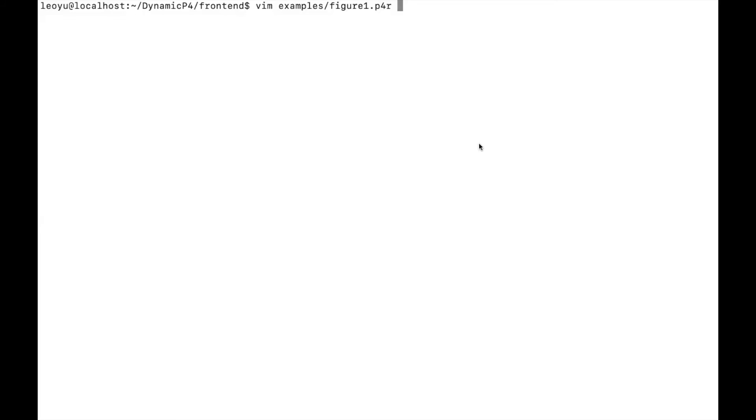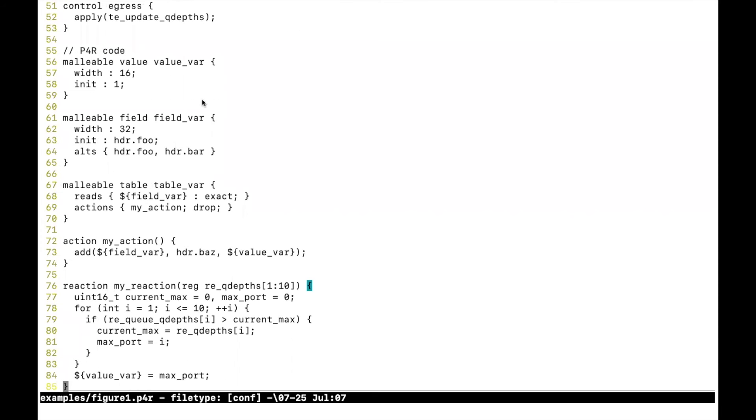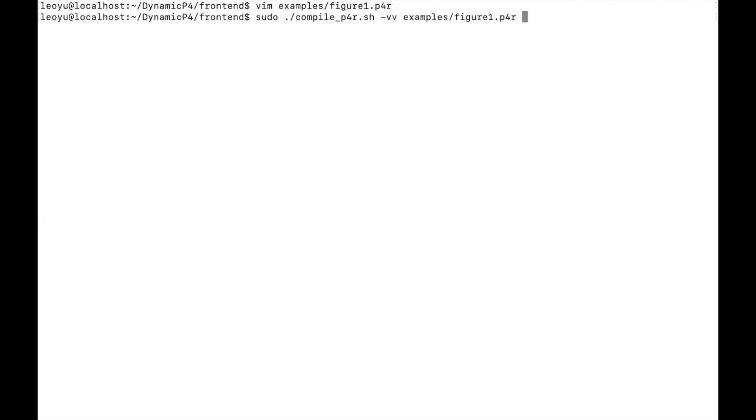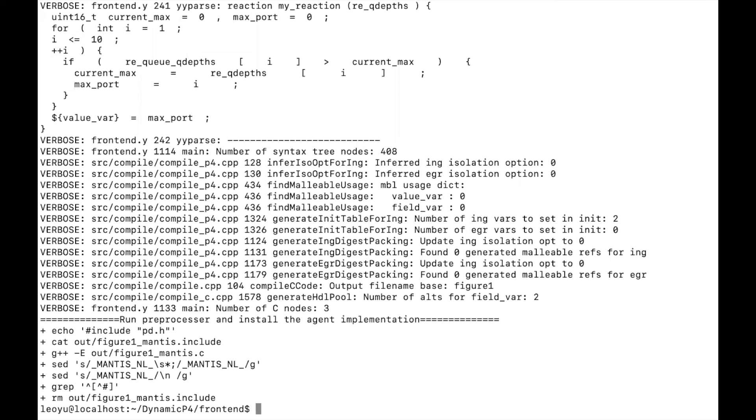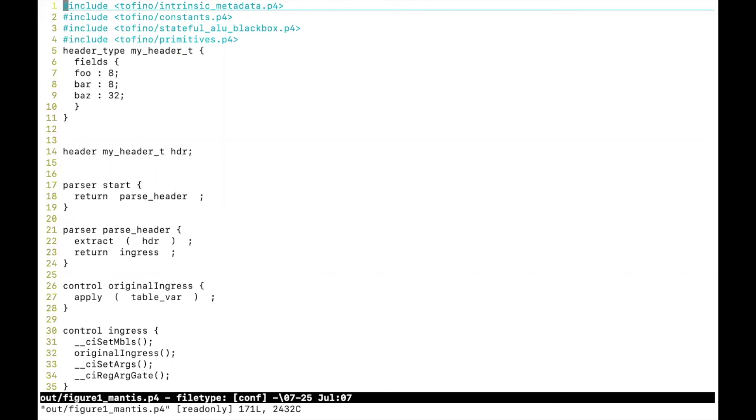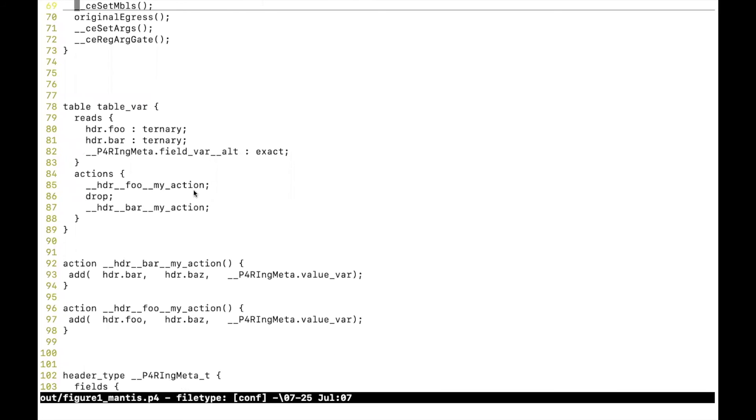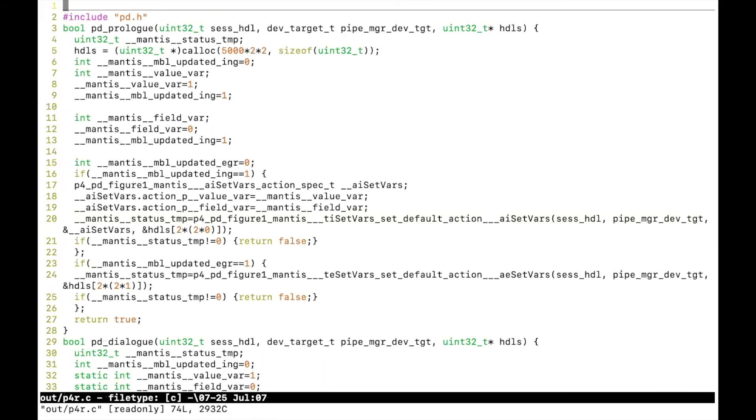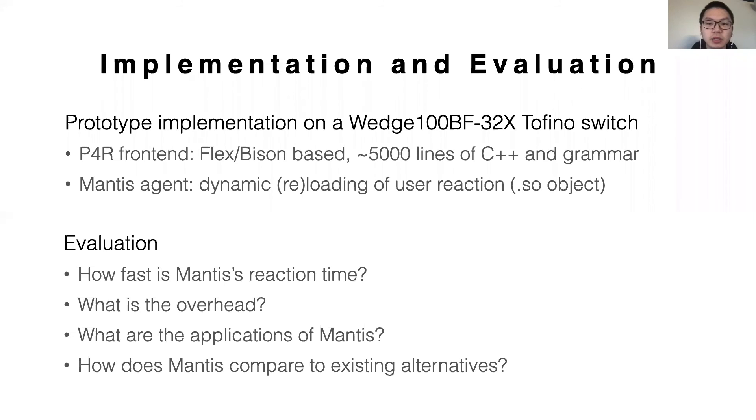Before talking about the evaluation, let me show the usage of Mantis really quick. This is a simple P4R program. Here we declare the malleable entities and a simple reaction. In the compilation scripts, we get two files. This is the generated malleable P4 code. For example, here's the transformation of malleable entities. This is the generated C file, which will be generated into a shared object later linked to the agent.